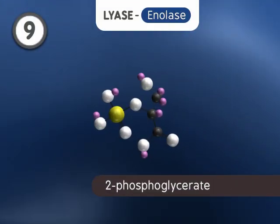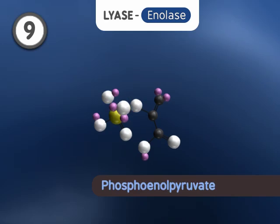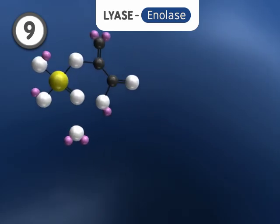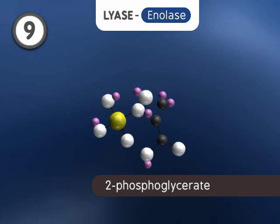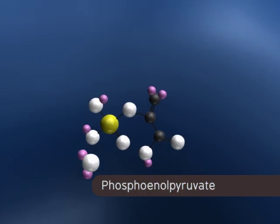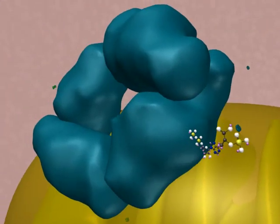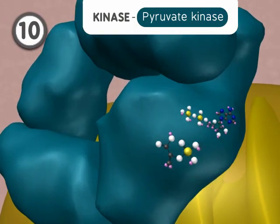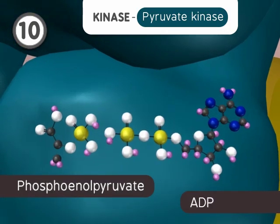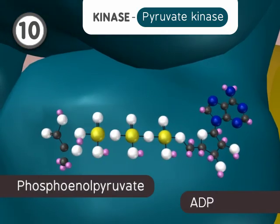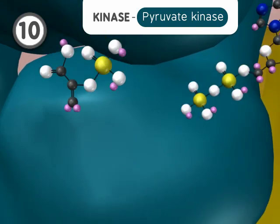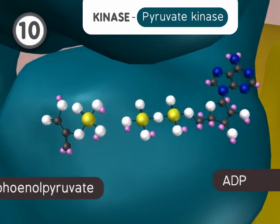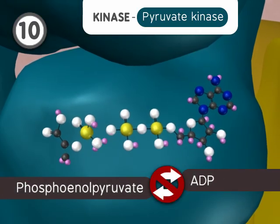In step 9, a lyase reaction removes water from 2-phosphoglycerate to form phosphoenolpyruvate. In the final step of glycolysis, a kinase reaction removes the phosphate group from phosphoenolpyruvate and donates it to ADP to form ATP and pyruvate. Like reactions 1 and 3, this step is irreversible.